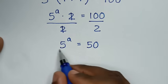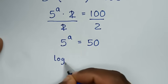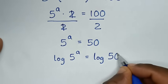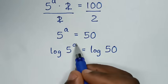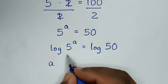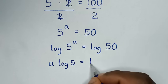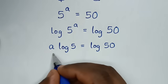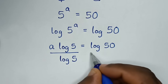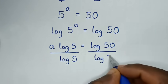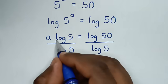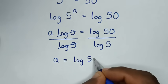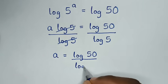Then in the next step we'll apply log on both sides. So it will be log of 5 power a is equal to log of 50. Into here, this power a will move to the front. So it will be a times log of 5 is equal to log of 50. Then we'll divide by log of 5 on both sides, so log of 5 cancels on the left. Then it will be a is equal to log of 50 over log of 5.